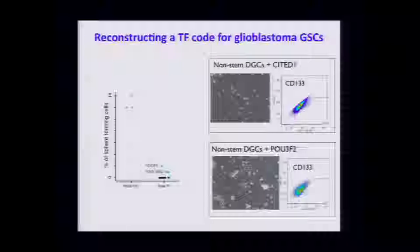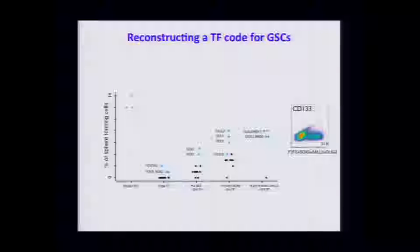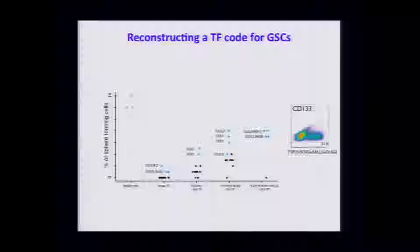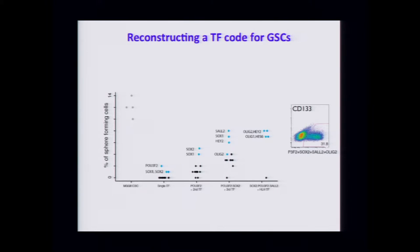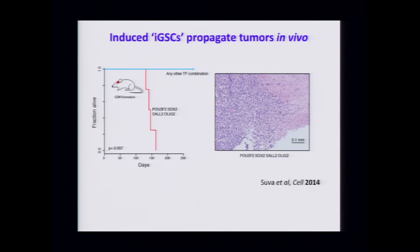By adding different transcription factors, a couple lit up. POW3F2 gave a little bit of something growing in the plate — no real CD133, but we thought we might be moving in the right direction. We started trying combinations: SOX2 gave a little more sphere formation. By iterating between factor additions and examining the enhancer maps, we were able to define four TFs — POW3F2, SOX2, SAL2, and OLIG2 — that when added to the cell lines would reprogram them into spherogenic stem-like cells that could propagate tumors. We call these induced GSCs.